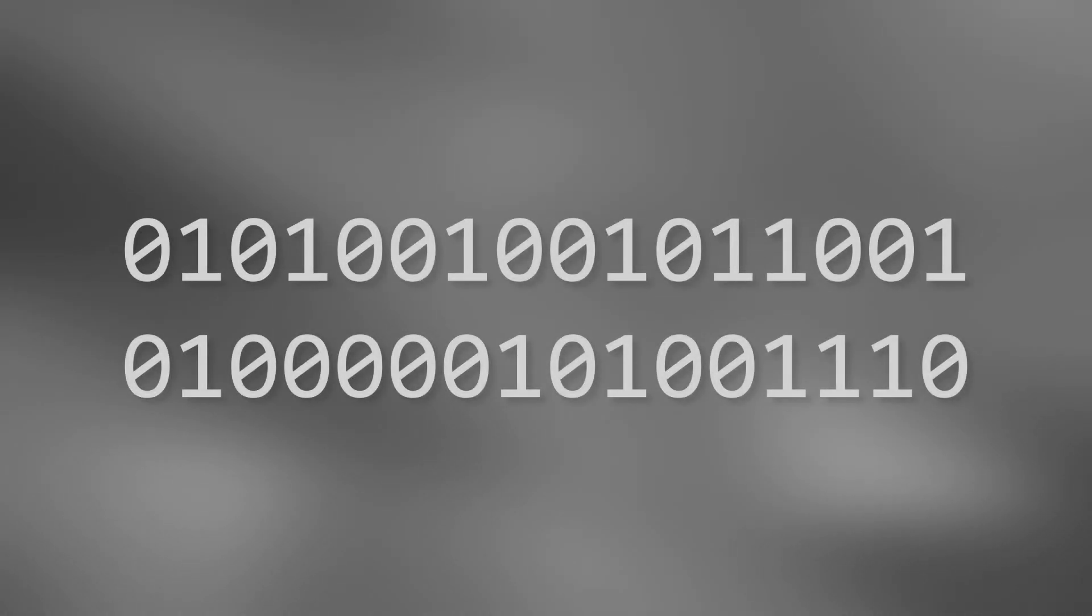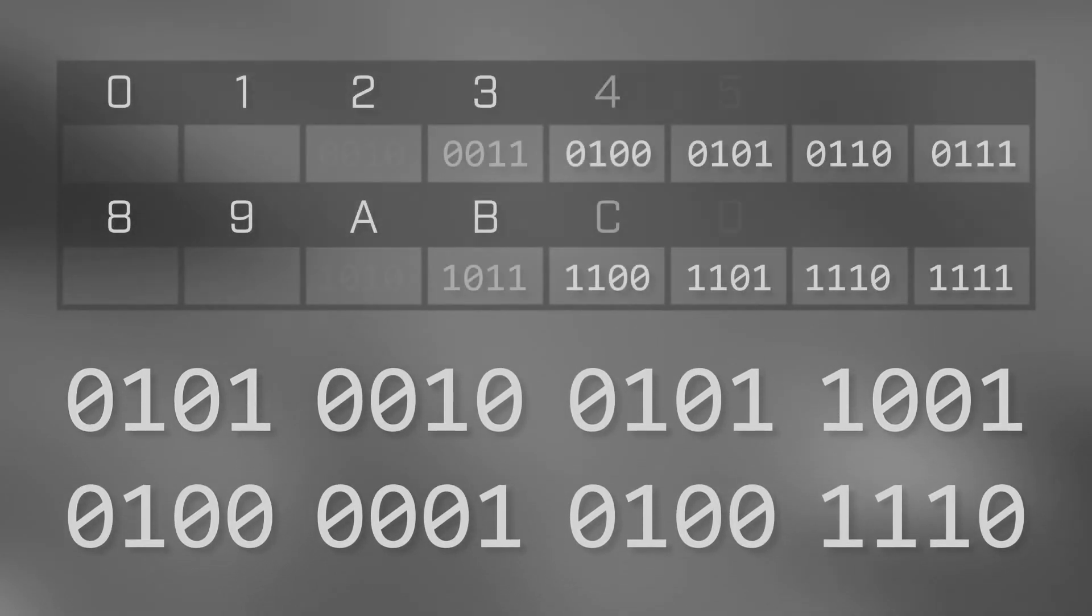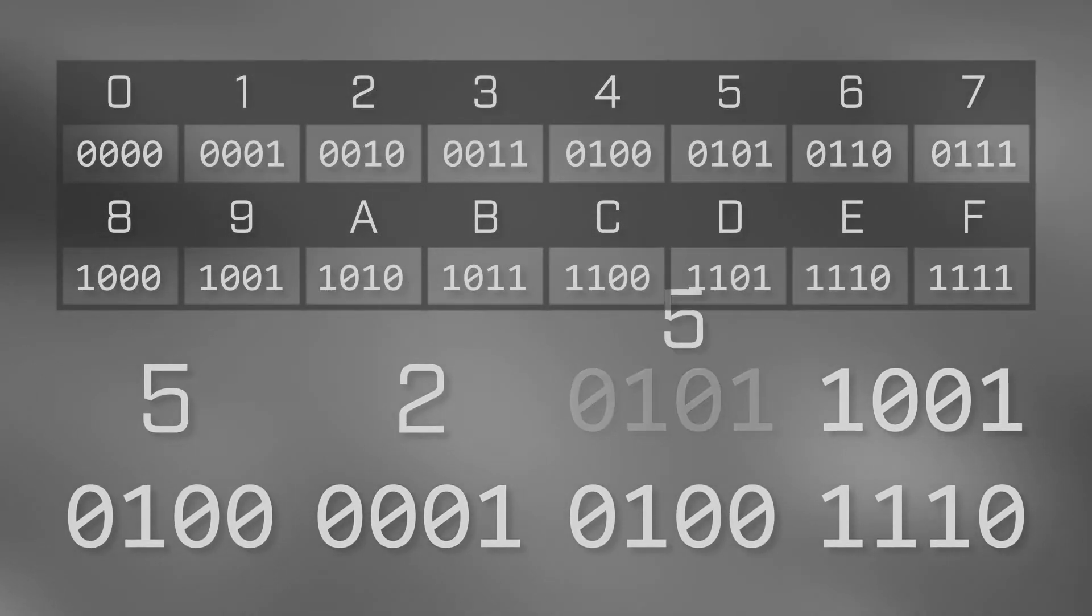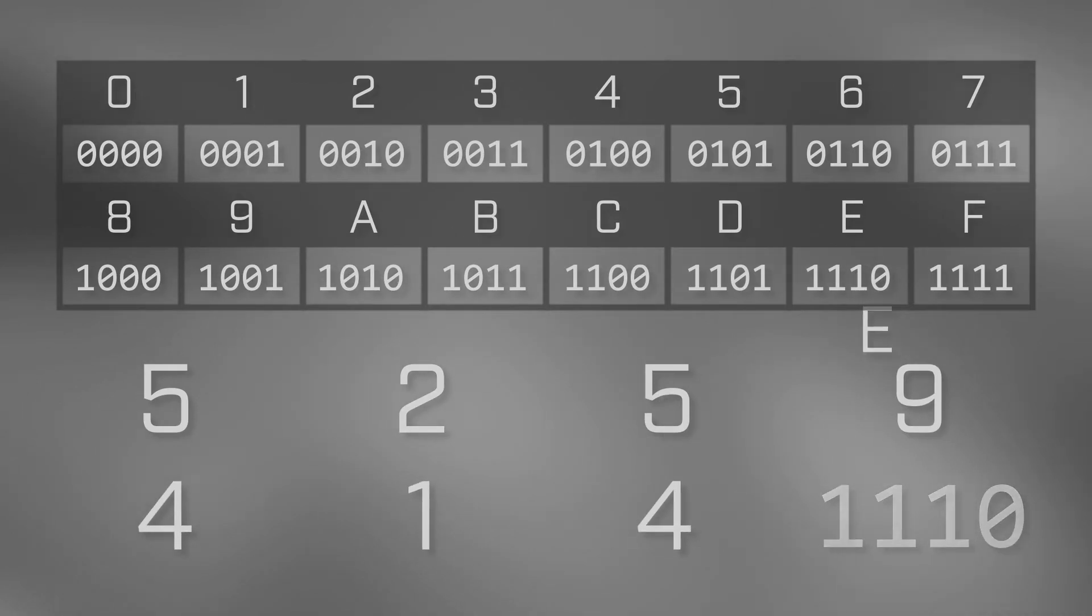Another great thing about the process is that it's easy to reverse. Let's take my name and convert it from binary into hexadecimal. First, we line up the binary that represents my name and split it into 4-bit chunks. Then, using the table, we convert each chunk into a single hexadecimal digit. Finally, we recombine the digits to form the full base 16 number.